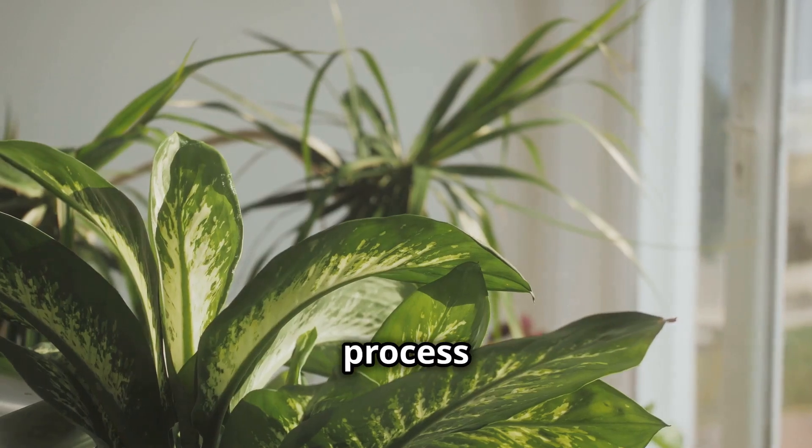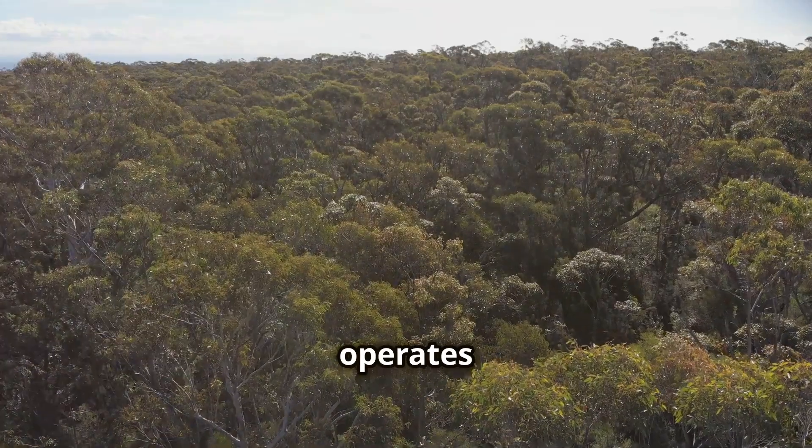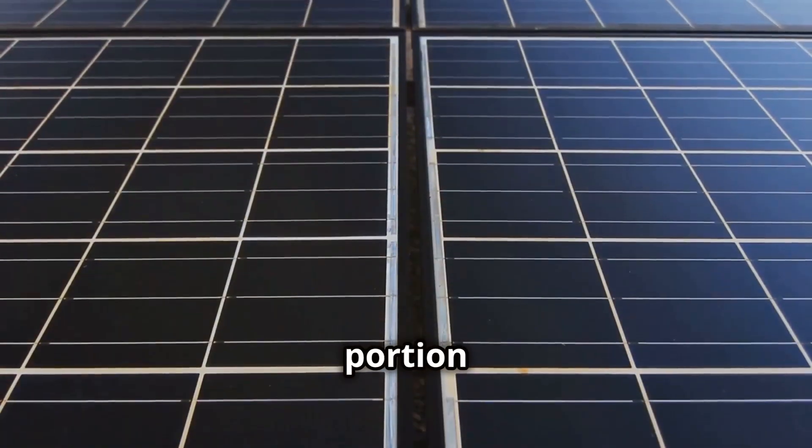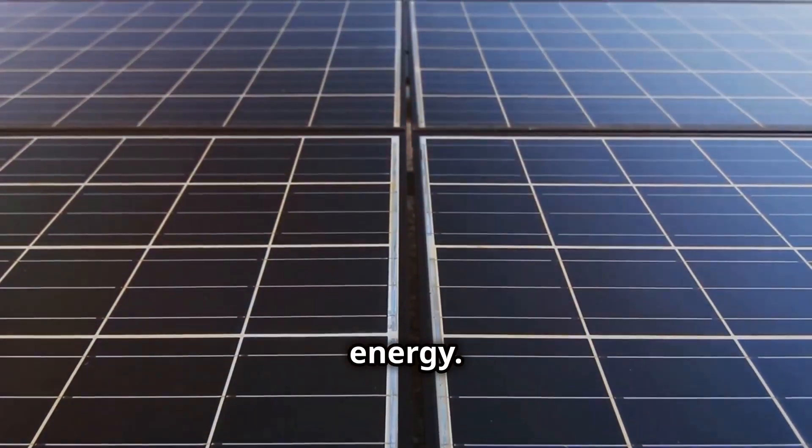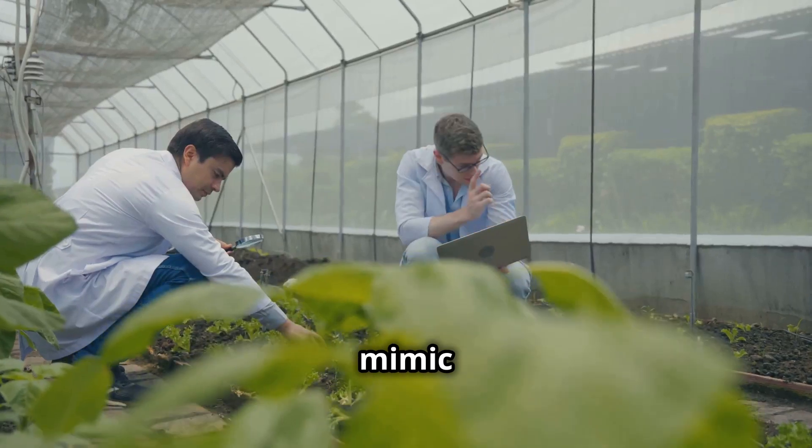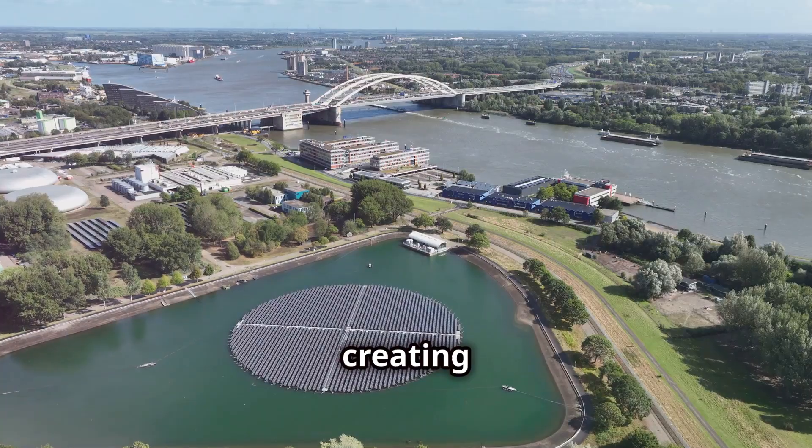Photosynthesis is the process by which plants convert sunlight into chemical energy, but did you know that it operates at only about 3% to 6% efficiency? This means that a large portion of the solar energy plants absorb is not converted into usable energy.